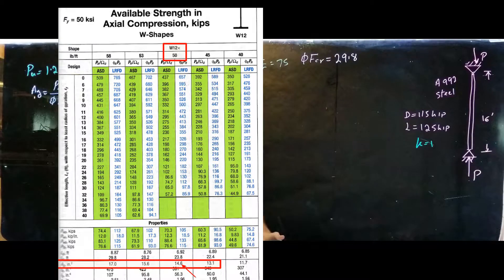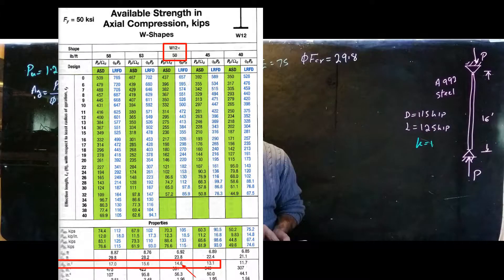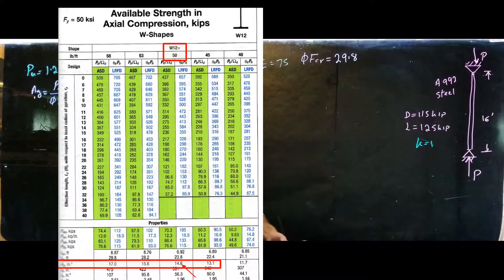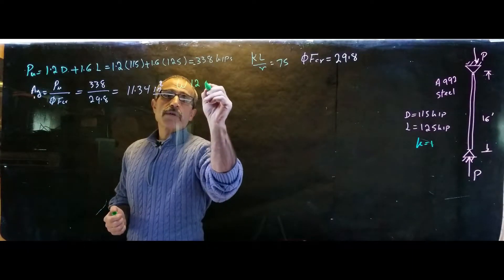Taking that area, we go back to the book again. Once we have that, we're going to go to table 4-1A. You go down the bottom and you find the area that you're looking for. You pick a member, like pick any W shape that you like. Let's focus on W12. We found an area closer to 11. So if we take the area 14.6, that's a W12 by 50. We're going to select based on area, W12 by 50.